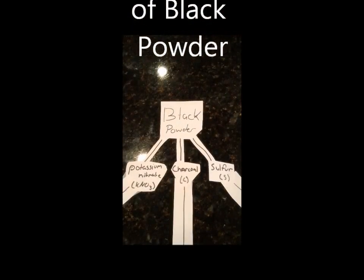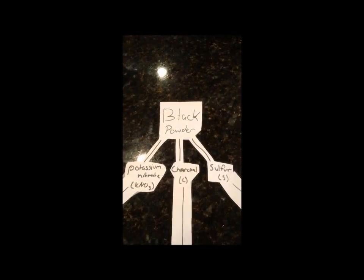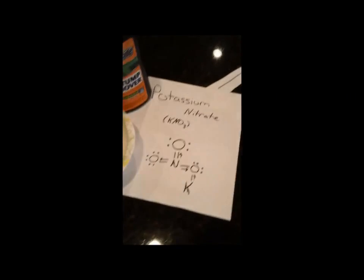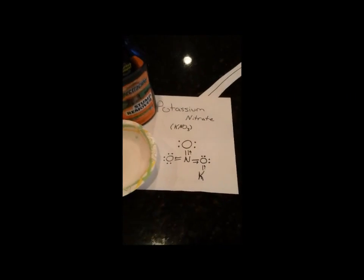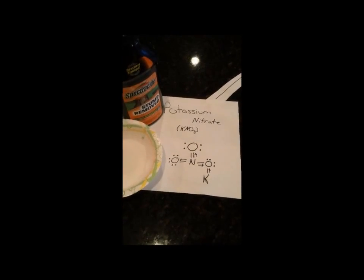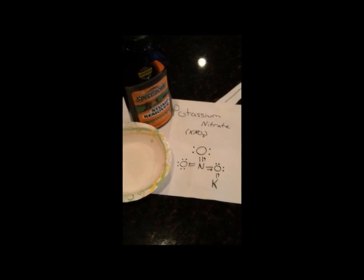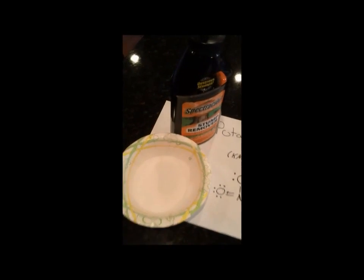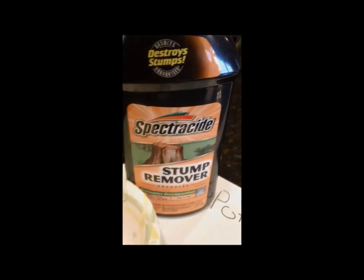Black powder is made up of three ingredients. The main ingredient is potassium nitrate. Potassium nitrate supplies oxygen for the reaction and is made up of one potassium atom, one nitrogen atom, and three oxygen atoms. It is commonly sold as stump remover in big name stores.